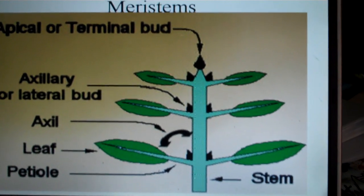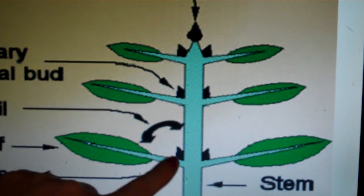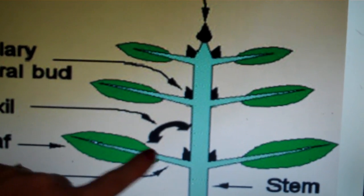A shoot is composed of a stem and petioles, or branches, with leaves.